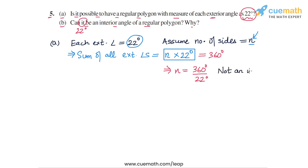Since we don't get an integer value for N, it is not possible to have 22 degrees as the measure of each exterior angle, because it doesn't give us any valid number of sides.